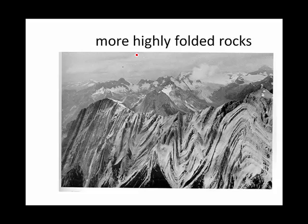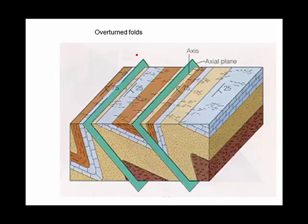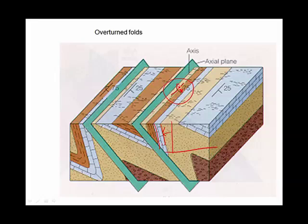Sometimes the rock layers can get so folded that they fold vertically and then fold over, so they look like they're going in the other direction. This rock layer was once horizontal and dipped straight up until finally it dips so much it looks like it's dipping 75 degrees in the other direction. You show that with a special symbol indicating it got there by going all the way up to 90 degrees and back in the other direction.